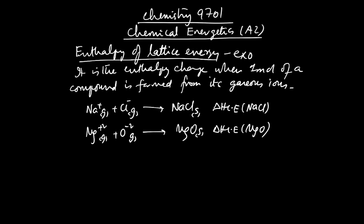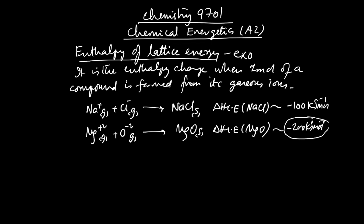For example, if NaCl has a lattice energy value of −100 (hypothetical) and MgO has −200, I can easily say that MgO has greater lattice energy and will have stronger ionic bonds — ionic bonds, not a single ionic bond.